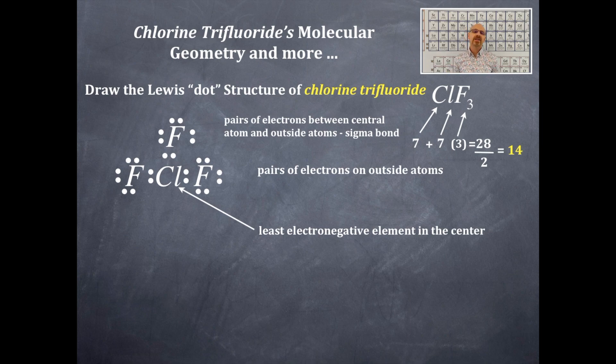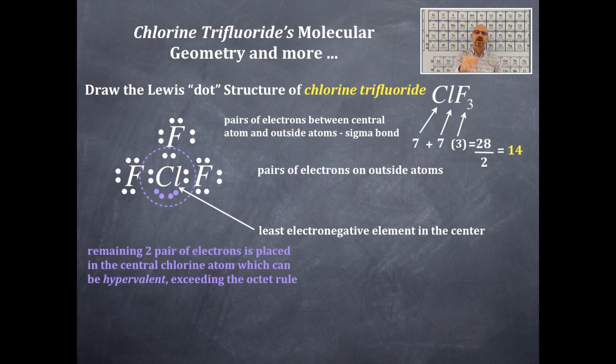Do I have any extra pairs of electrons left over? Yes, I do. I have two pairs of electrons left over, so those are going to go smack right in the center element. Now I'm going to ask the next question. Is chlorine period three or greater? So can it exceed the octet rule and be hypervalent? It is a yes for that. That's why chlorine can be hypervalent, exceeding the octet rule.